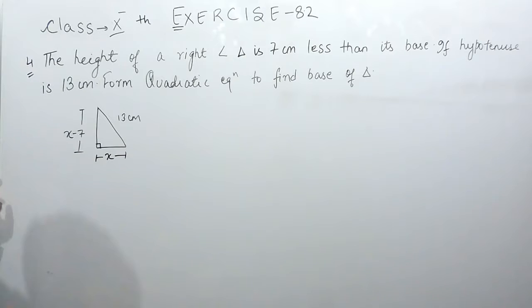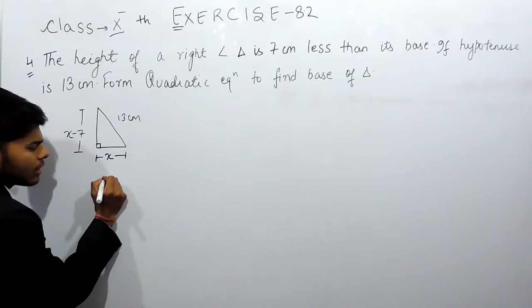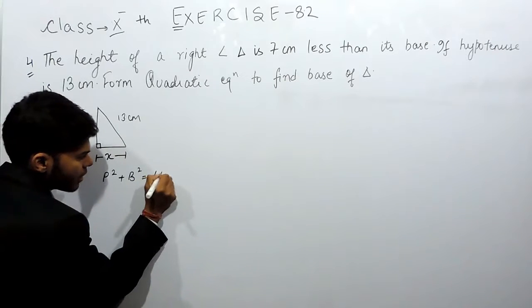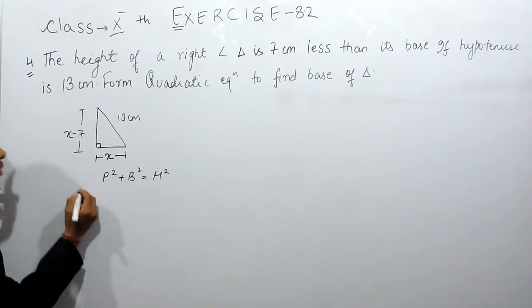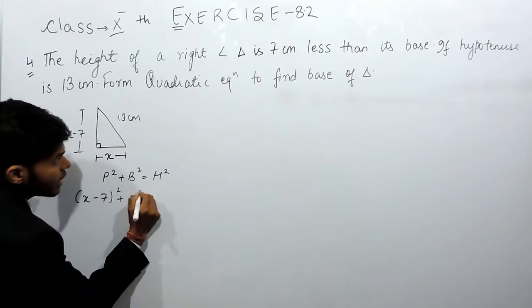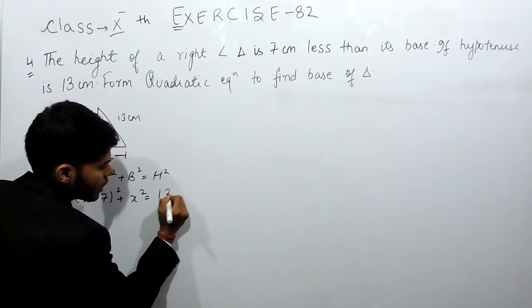Now you know that in a right angle triangle, p square plus b square equals h square. So x minus 7 whole square plus x square equals 13 whole square.